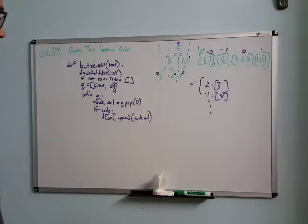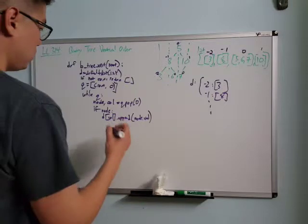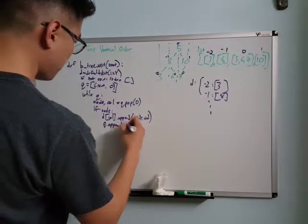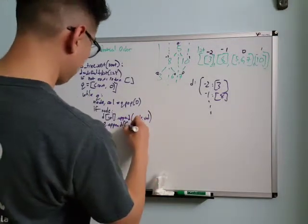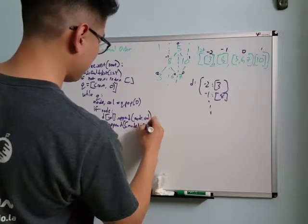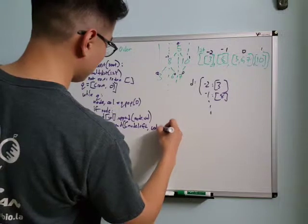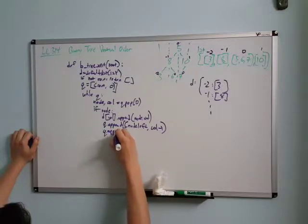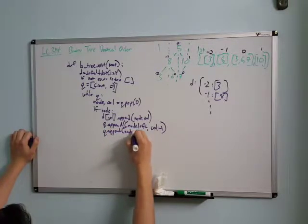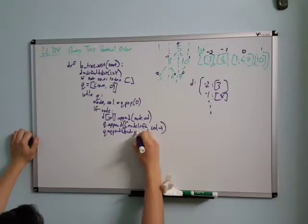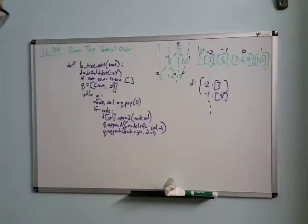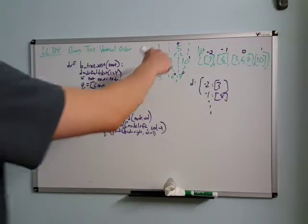Then we need to go left and right: `q.append([node.left, column - 1])` and `q.append([node.right, column + 1])`. So our queue starts with five at column zero.